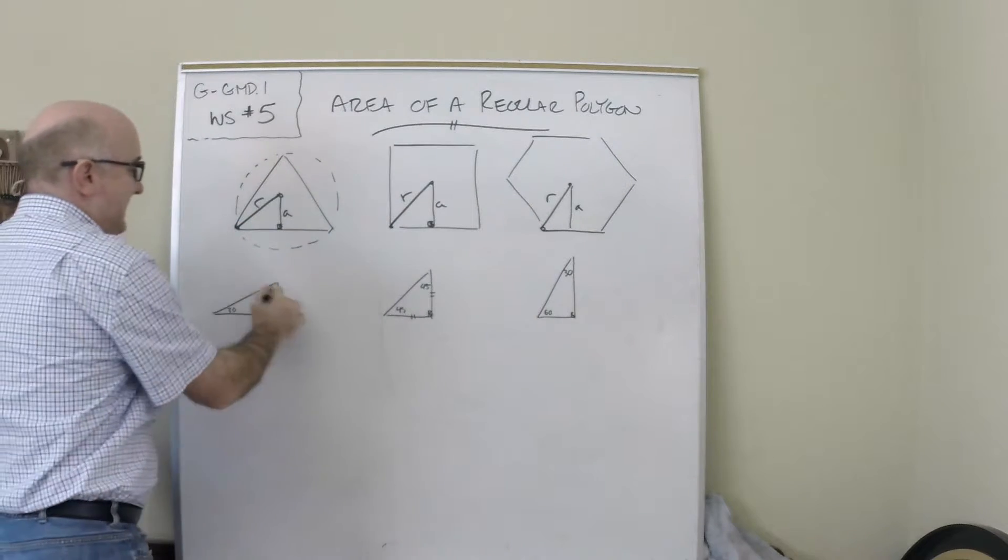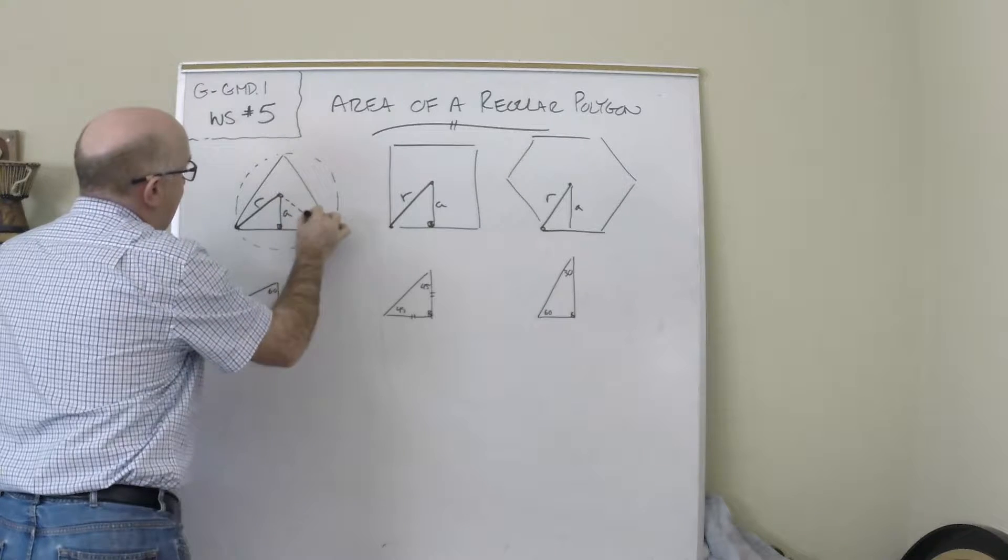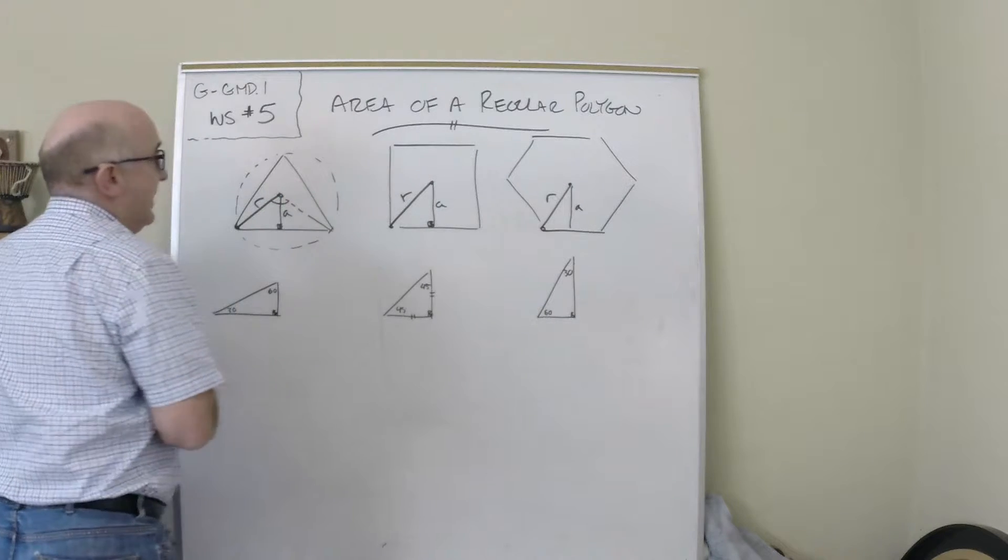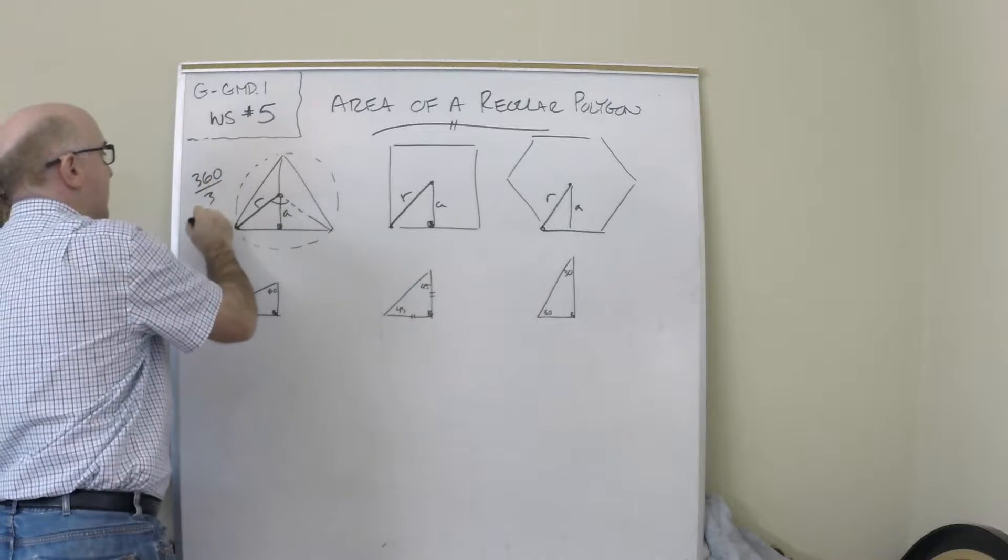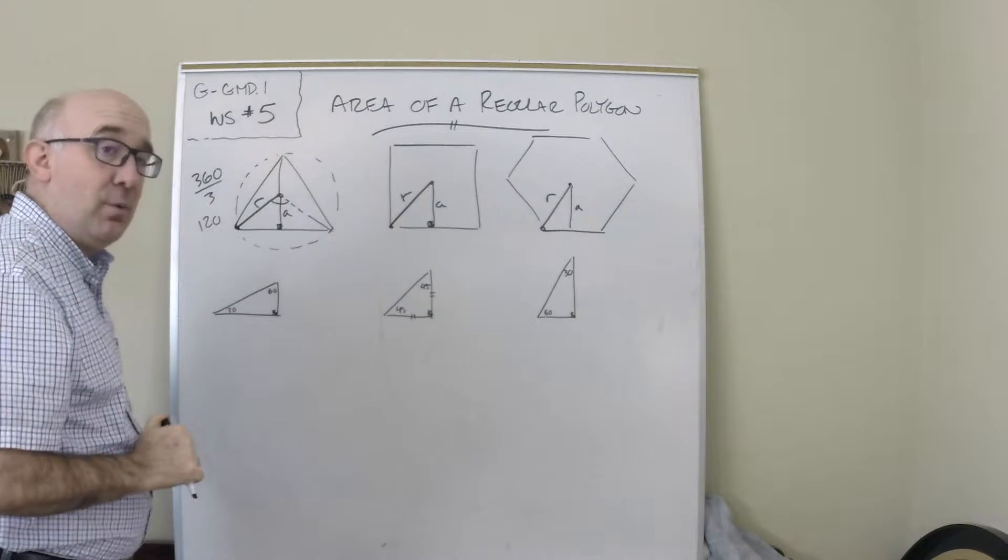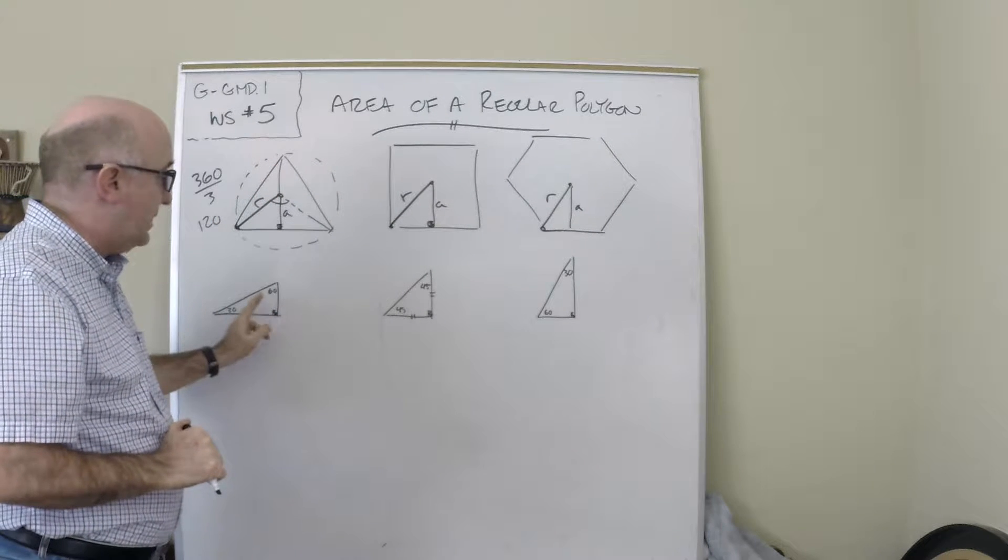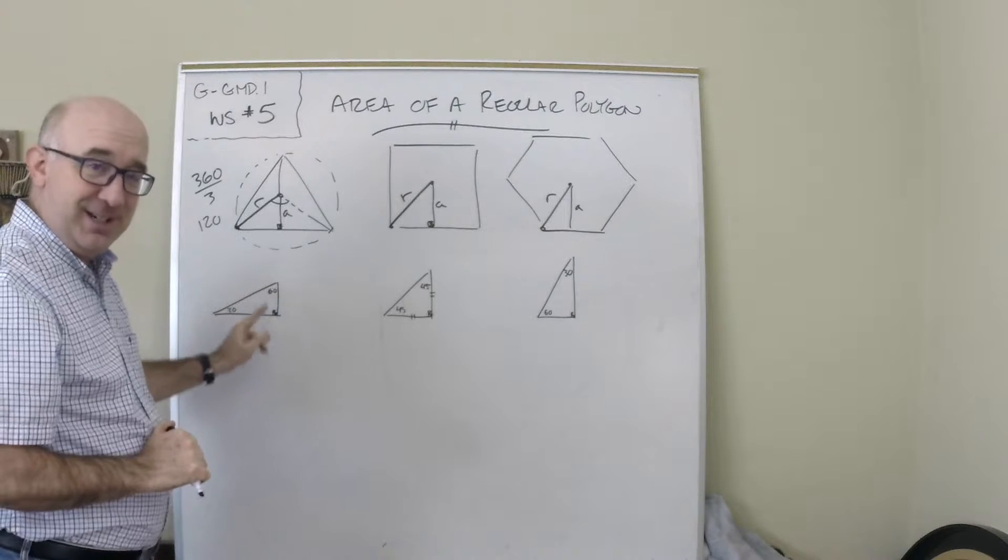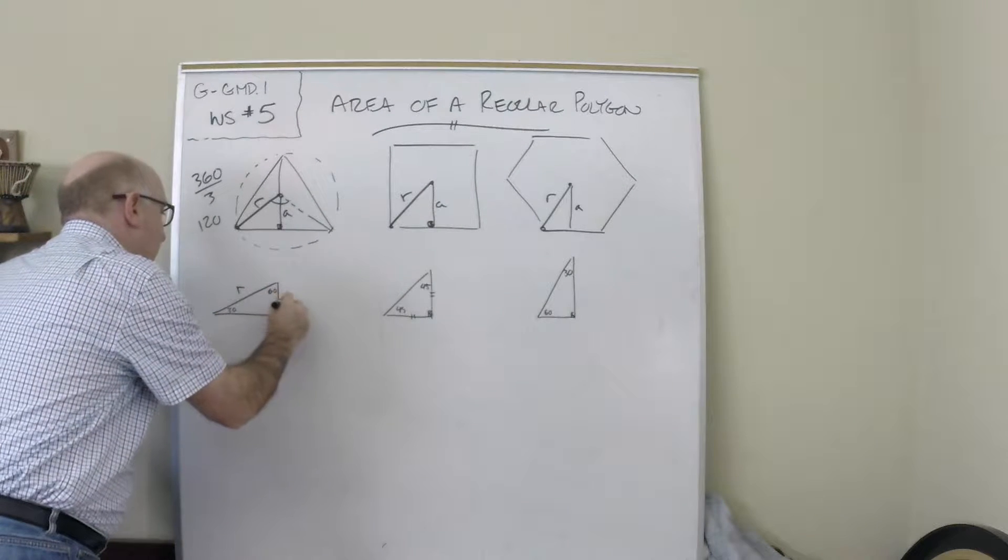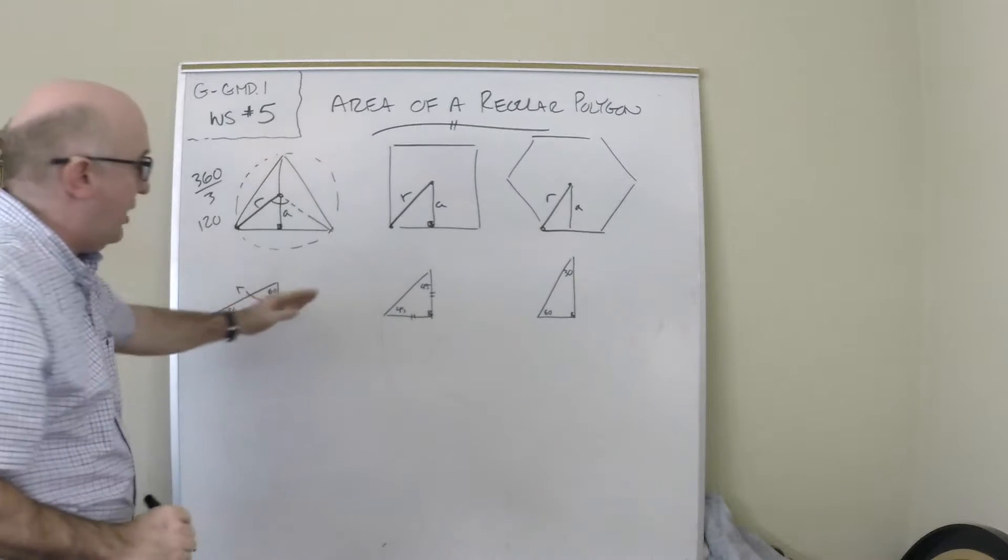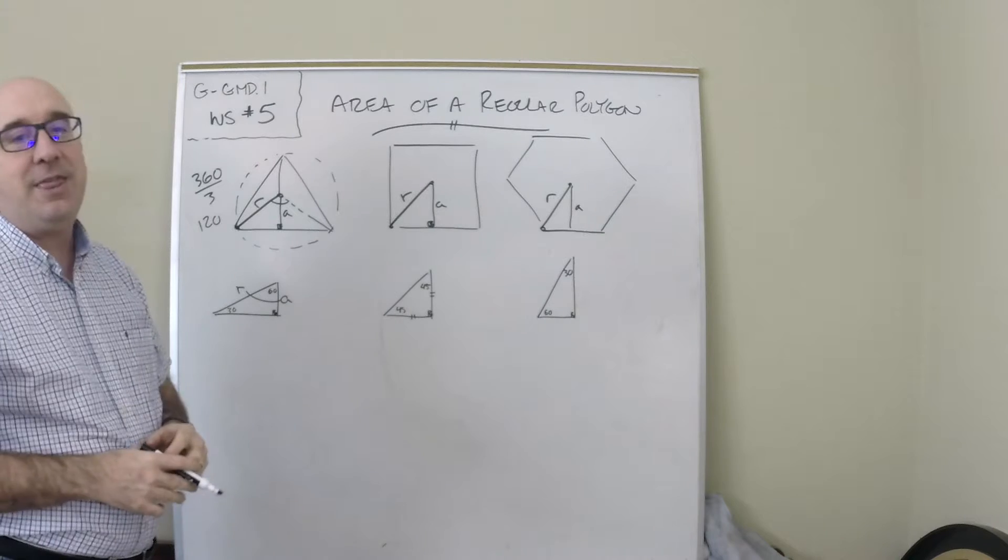This one is a 30-60-90 triangle, and the reason for that is the central angle is 120 in this guy. A central angle of 360 divided by three gives me a central angle of 120. When you cut that in half with the apothem, you get a 60 degree angle, 30-60-90. The radius and the apothem in this guy are the hypotenuse and the short leg, so the radius is double the apothem.